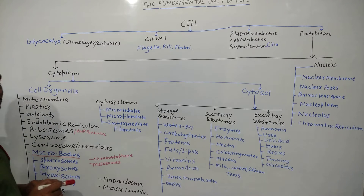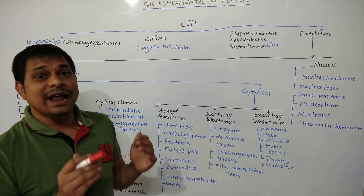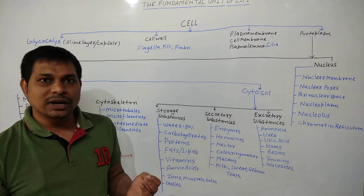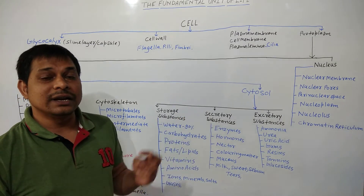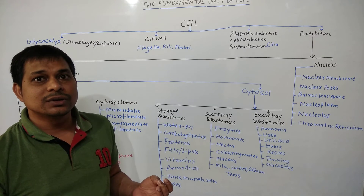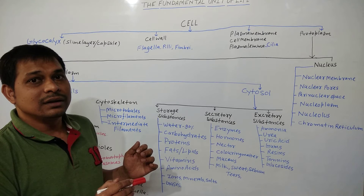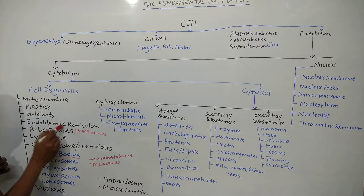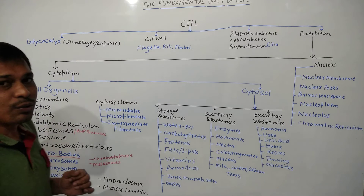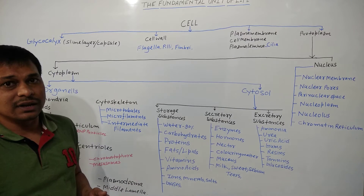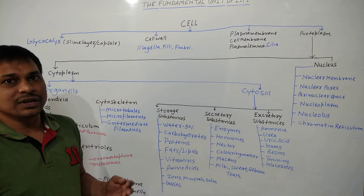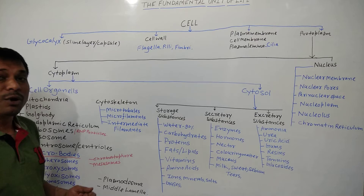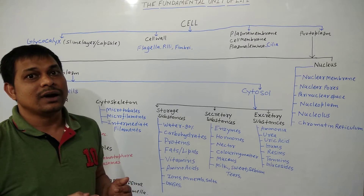Next is the Golgi body, known as the traffic police of the cell. It is also known as dictyosome in plants, baker's body, idiosomes, or Golgi apparatus. Next is the endoplasmic reticulum, which acts as the endoskeleton of the cell. It provides strength, mechanical support, and rigidity to the cell, and is commonly known as the highway of the cell.